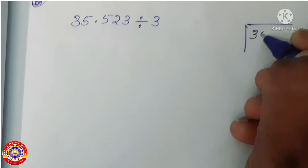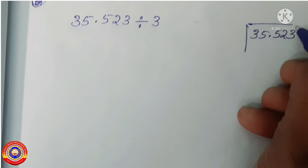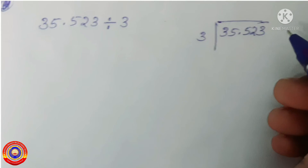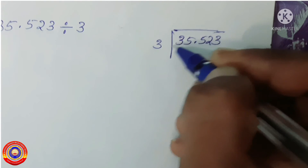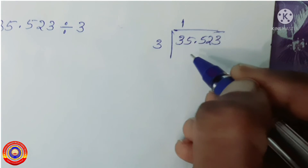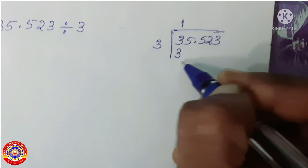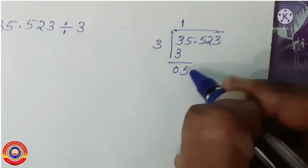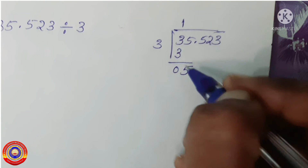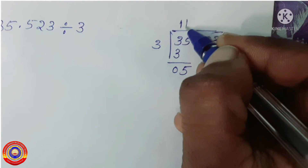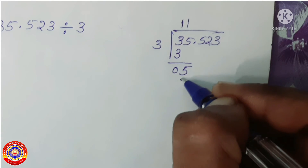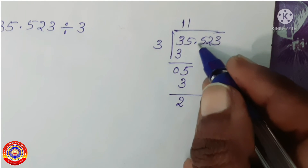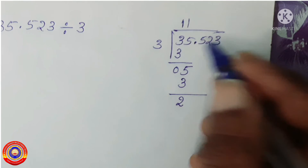Next question: 35.523 divided by 3. We have to divide these numbers one by one. First, divide 3 by 3 — yes, it is one time. 3 multiplied by 1 is equal to 3, and 3 minus 3 is equal to 0. Now we have to divide 5 by 3 — yes, it is 1 time. 3 into 1 is equal to 3, and 5 minus 3 is equal to 2.